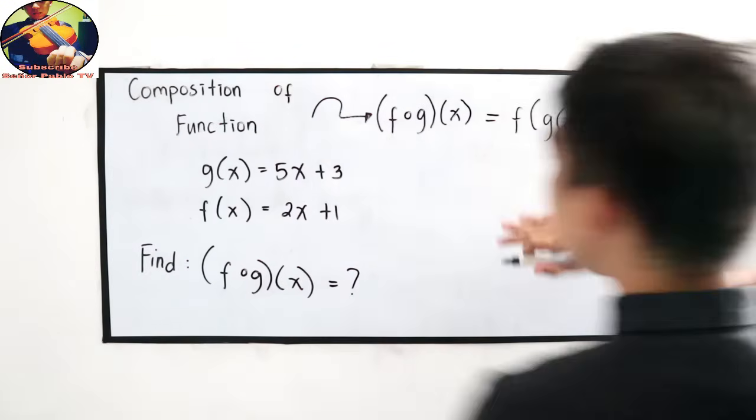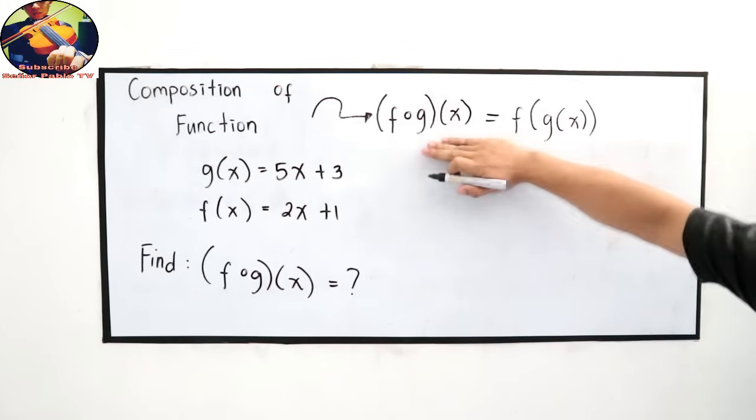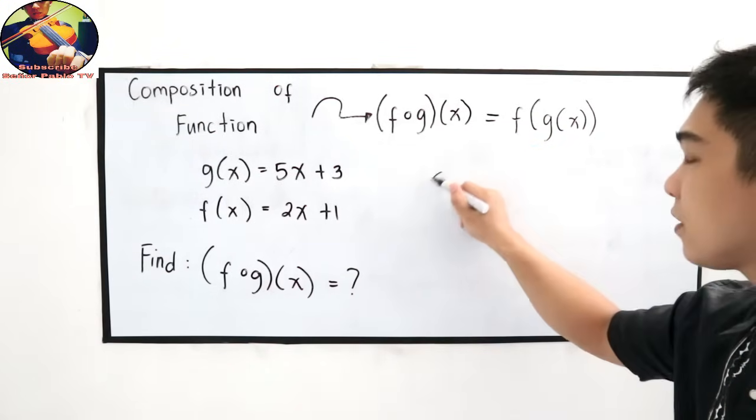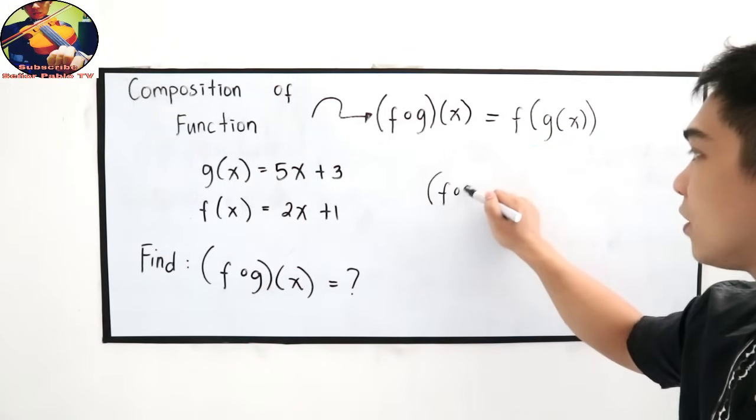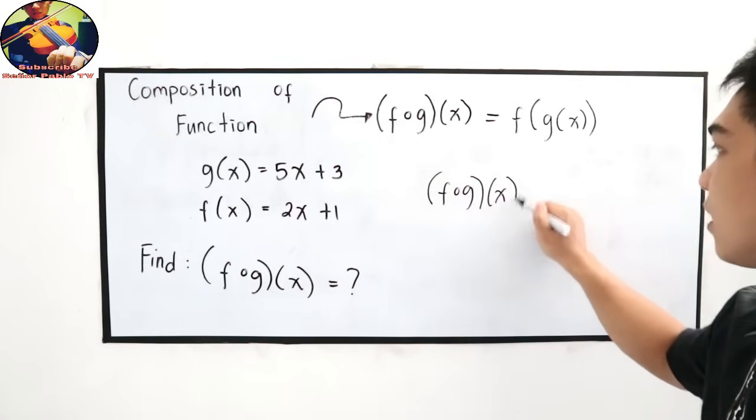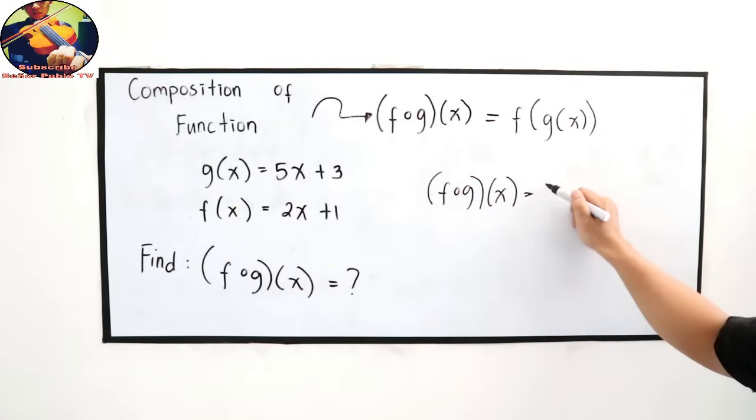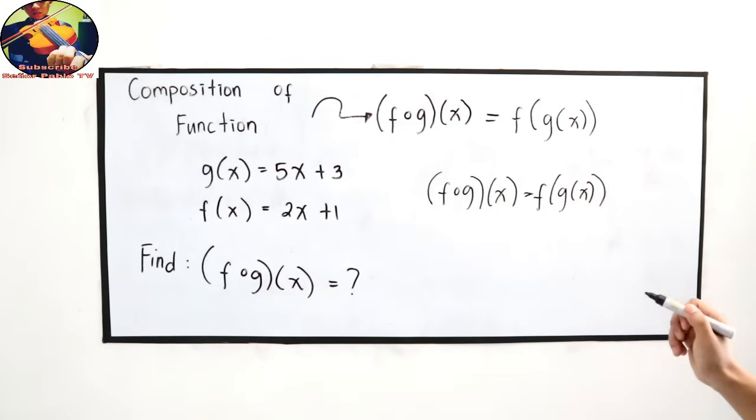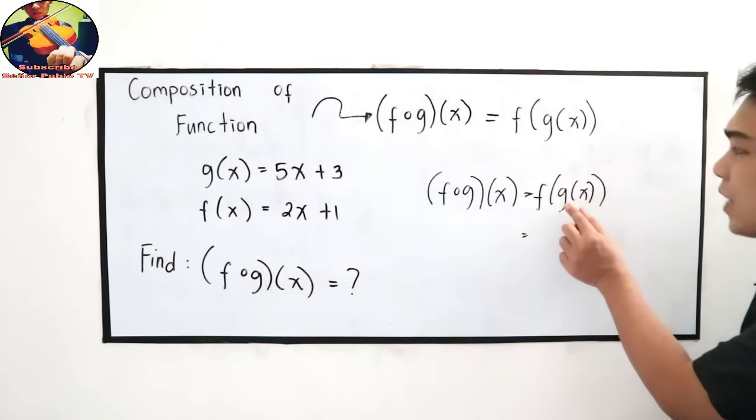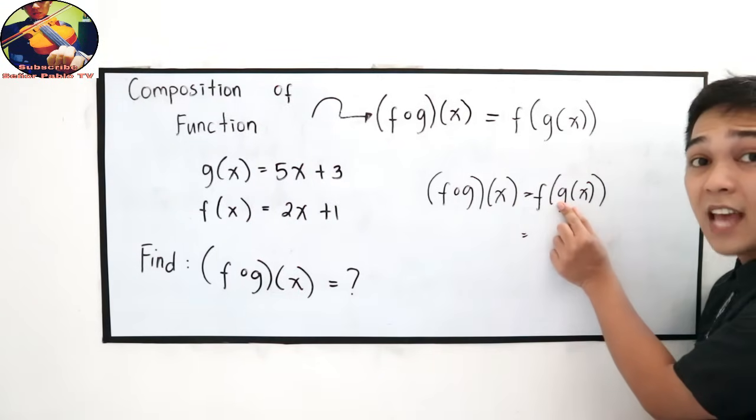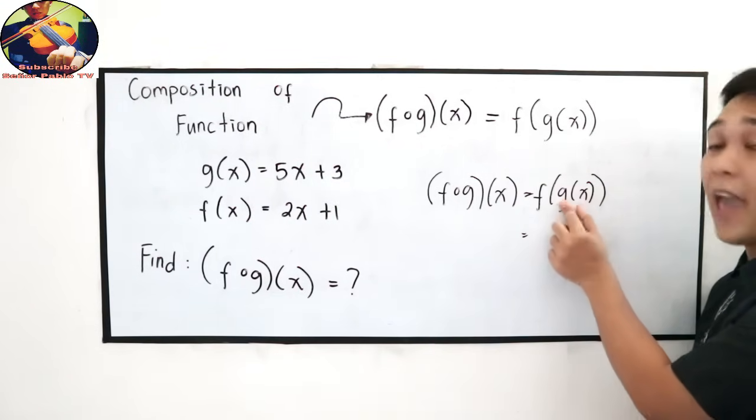So we know, because of composition of functions, f of g of x is equal to f of g of x. So what do we start with first? What's inside the parenthesis? g of x.